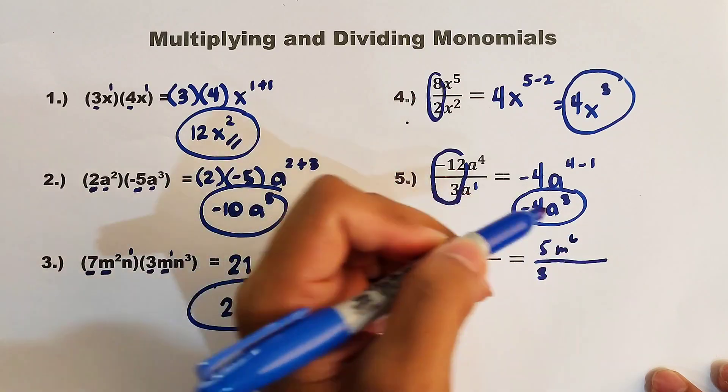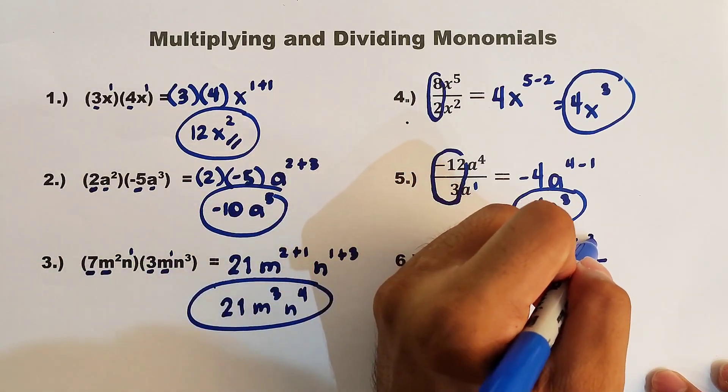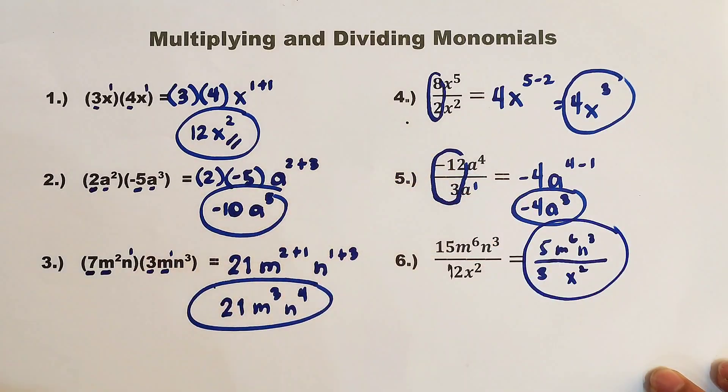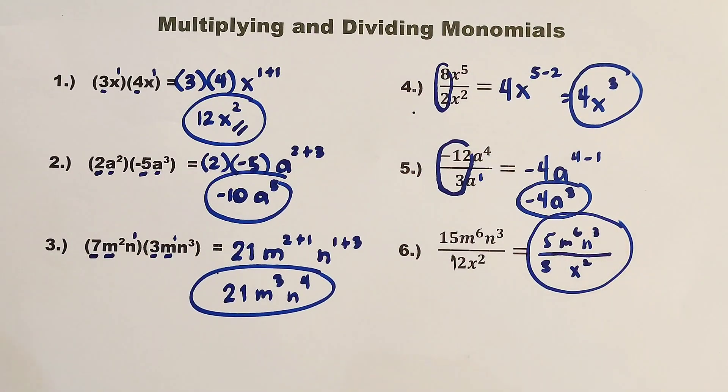m raised to 6, n raised to the third power, and x squared. This is now the answer for item number 6. So, guys, I hope you learned something from this video on how to multiply or divide simple monomials.